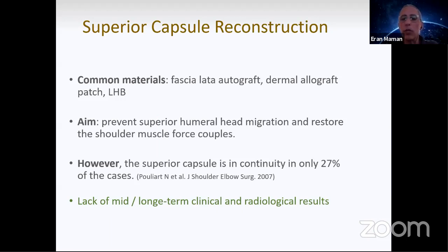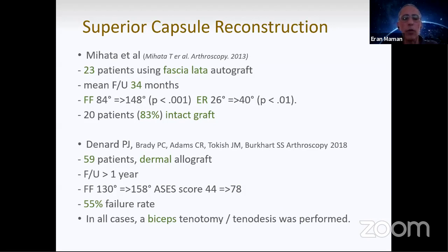However, we know the superior capsule is in continuity only in around one-third of patients, as shown in this study by Pouliart. We lack mid- and long-term clinical and radiological results, so we cannot say for sure whether it's working. Mihata did these surgeries in Japan using fascia lata. He took the fascia lata, an autograft of the patient, and folded it up to around one centimeter width and put it on top of the humeral head and glenoid.